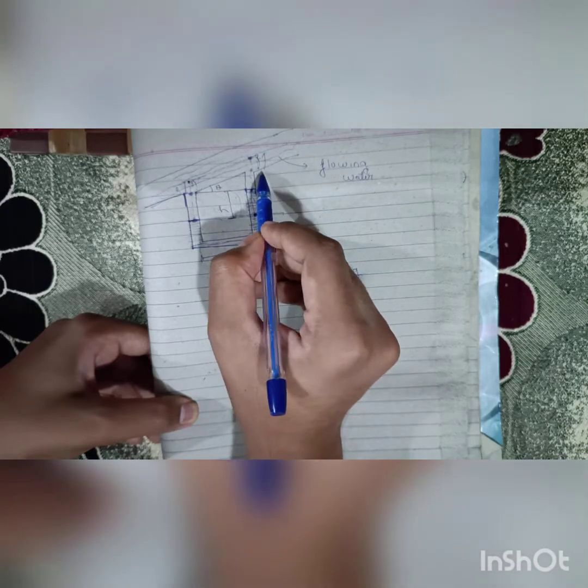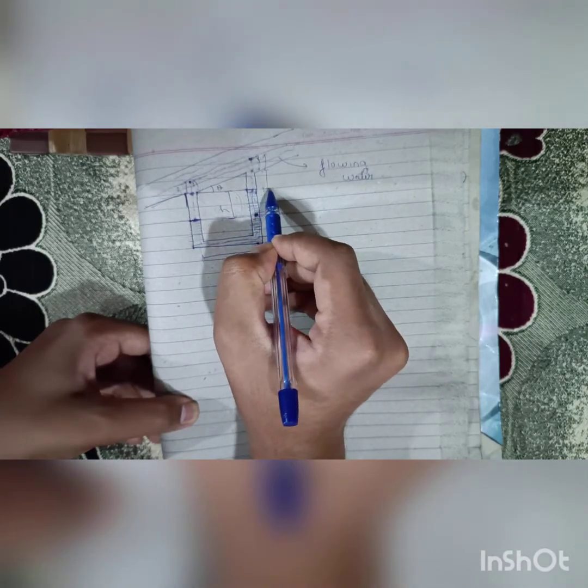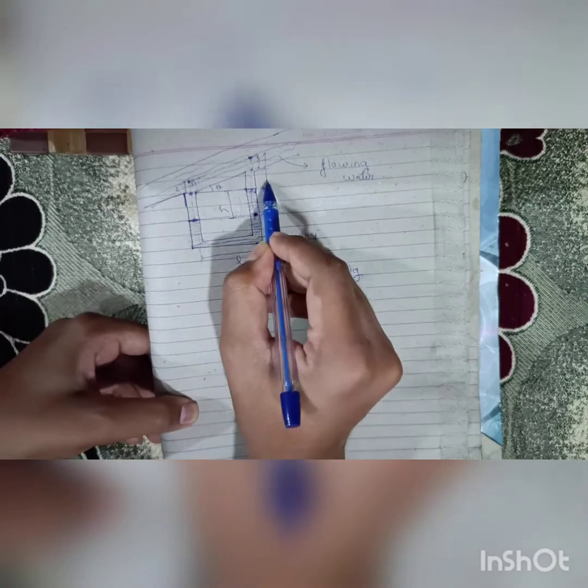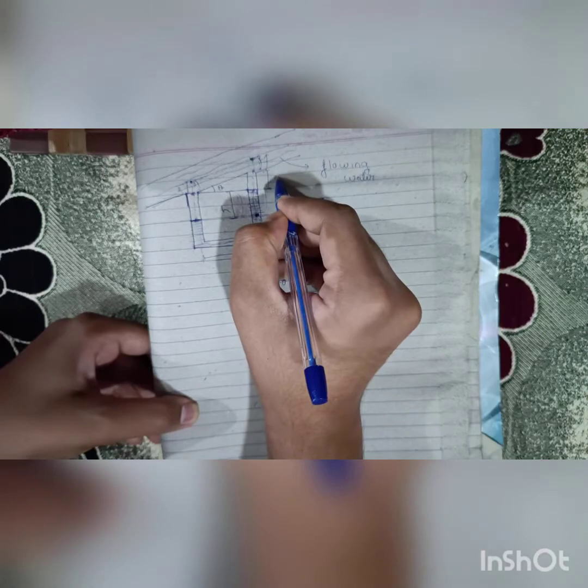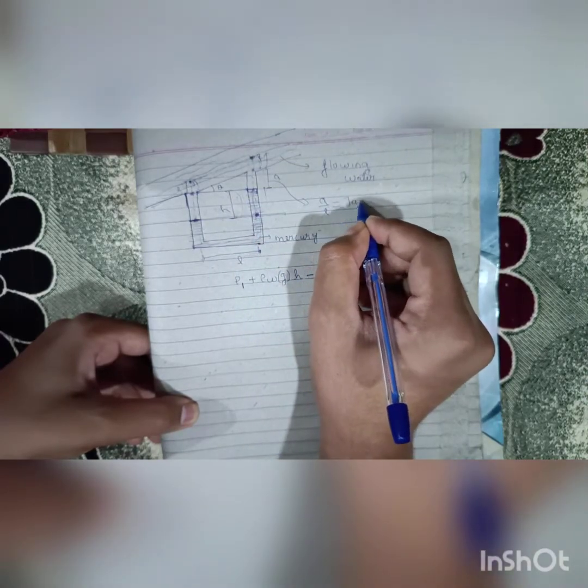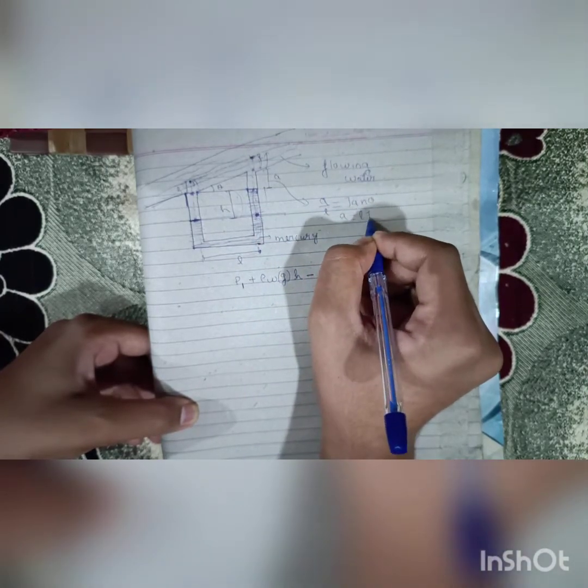Since we are traveling opposite to gravity, it will be minus rho Hg h times g. Now we have to travel till here. What will be this length? Since this is l and using trigonometric ratios, a divided by l is tan theta, so a equals l tan theta.